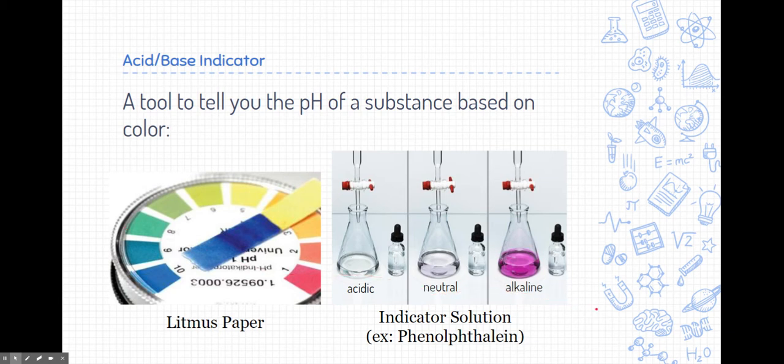Indicator solutions are also used. This indicator solution is phenolphthalein, and you're going to get a chance to see phenolphthalein in action later on when we talk about titrations. But quite simply, phenolphthalein, when put in a solution, is clear when it's acidic. When it's neutral, it starts to turn a faint pink, and if it's alkaline or basic, it's very bright fuchsia.